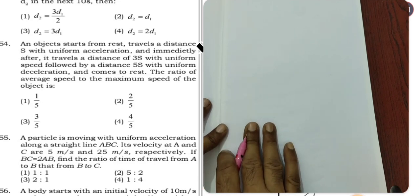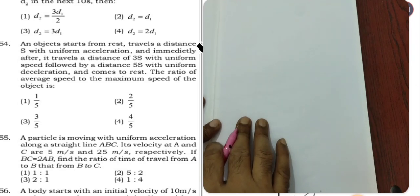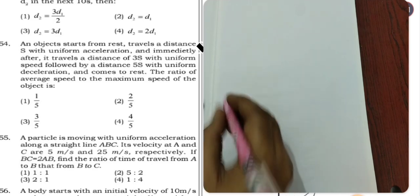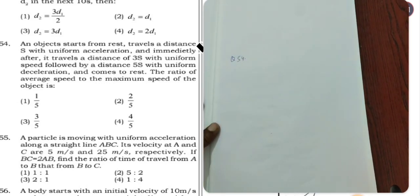The ratio of average speed to the maximum speed of the object is. So let's look at the maximum speed, average speed and maximum speed ratio. Let's look at the question graphically and approach it.